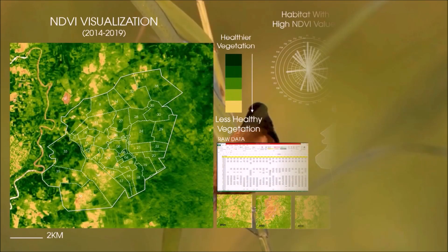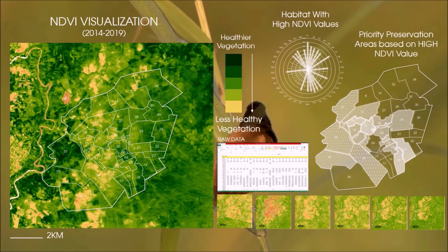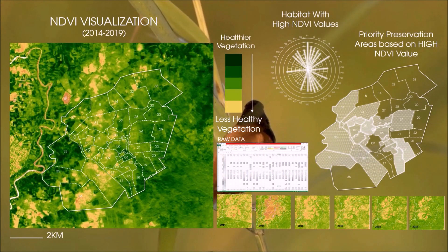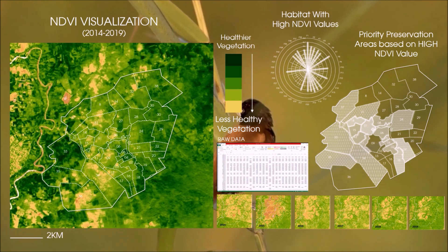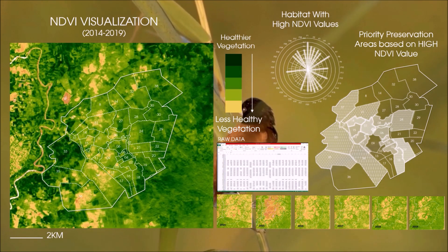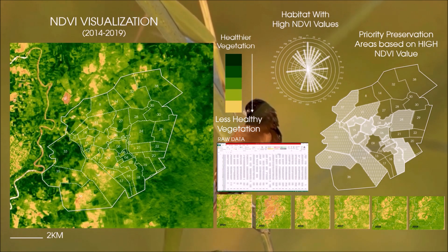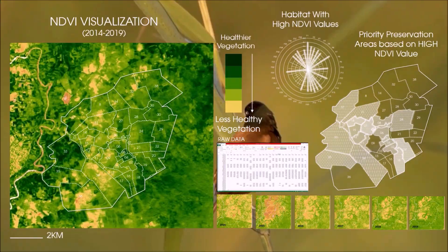The Normalized Difference Vegetation Index or NDVI is used to determine areas with high vegetation vigor that are important for birds.